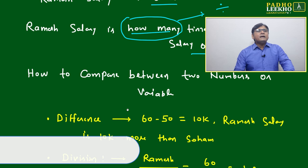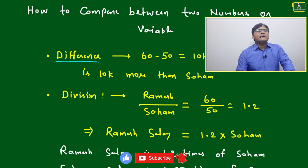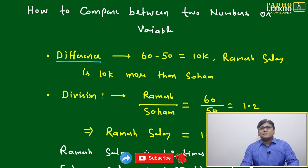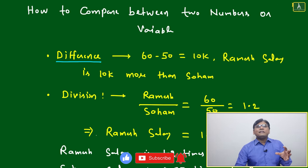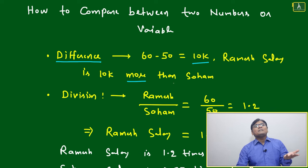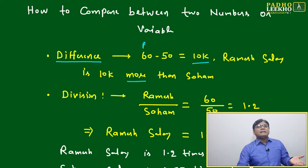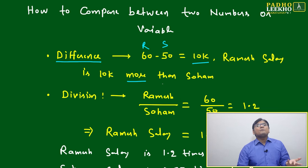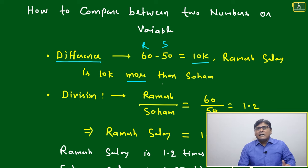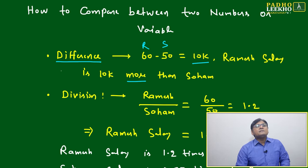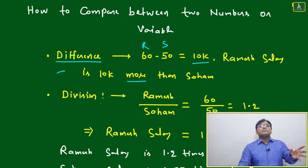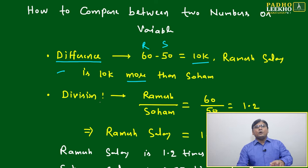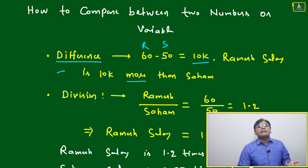One way to compare is using arithmetic difference. If Ramesh's salary minus Shoham's salary is 10k, we can say Ramesh's salary is 10k more than Shoham's. This is based on the arithmetic operation of difference — we simply take the difference between the two salaries to say Ramesh earns 10k more.